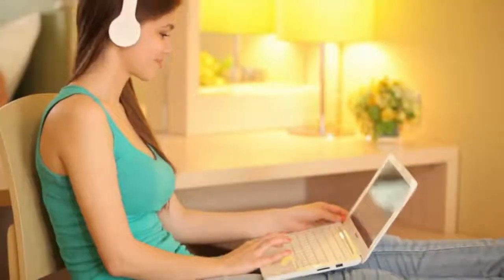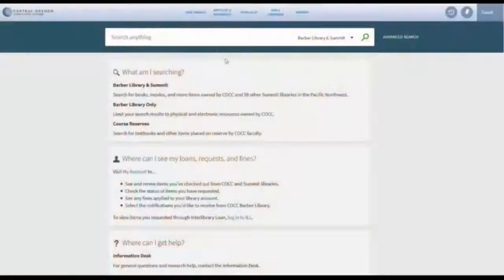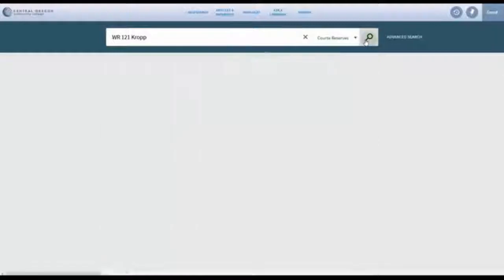To check if your textbooks are on reserve, visit the Barber Library and Summit catalog. To see all items on reserve for your class, enter the course number and your instructor's last name. Use the drop-down on the right to select Course Reserves and click the magnifying glass icon to search.